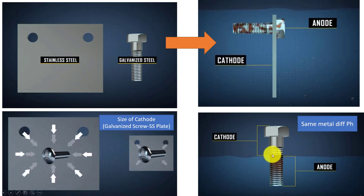We can also have different pHs. So if we have a material that goes into a solution that has different pH values, we might see an anode cathodic reaction happening there.